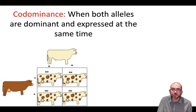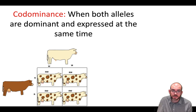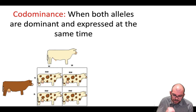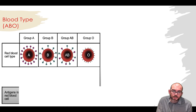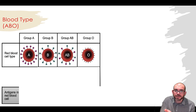This is something called co-dominance. This is when both alleles are dominant and expressed at the same time. In this example, I have a tannish cow and a brownish cow, and all of their offspring are both tan and brown — they are both dominant at the same time. There is no better example of co-dominance than human blood types. You may have heard that humans can be type A, type B, type AB, or type O.